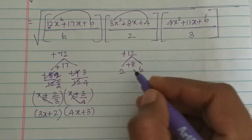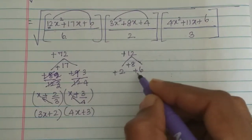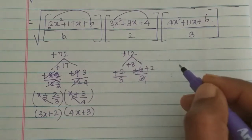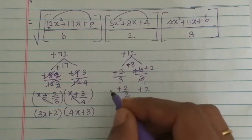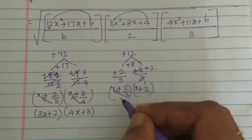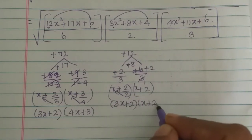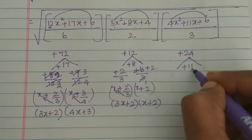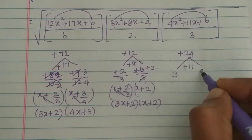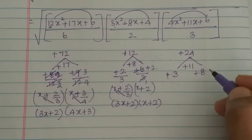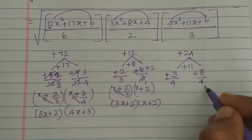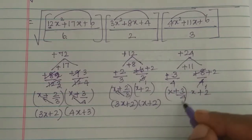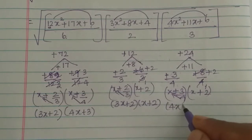For 3x² plus 8x plus 4: 3 times 4 is 12. We need two numbers that multiply to 12 and add to 8. That is 2 and 6. Both are plus. Dividing by coefficient 3 gives plus 2/3 and plus 2. So x multiplied gives 3x plus 2 into x plus 2. For 4x² plus 11x plus 6: 4 times 6 is 24. We need 8 and 3: 8 plus 3 is 11. Dividing by 4 gives plus 3/4 and plus 2. So the factors are 4x plus 3 into x plus 2.